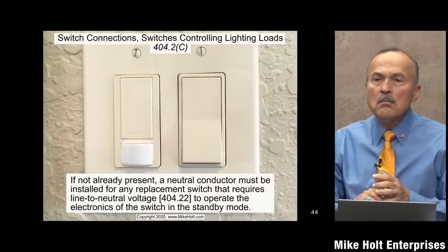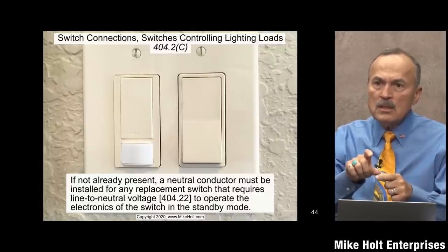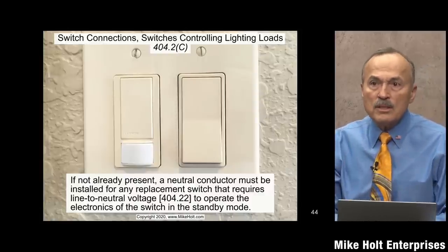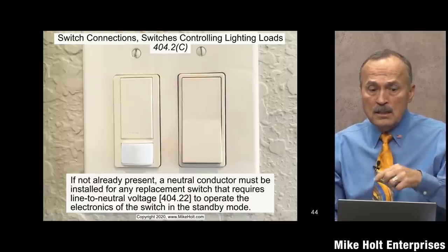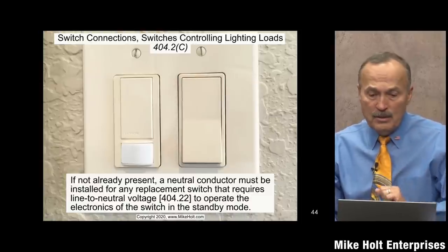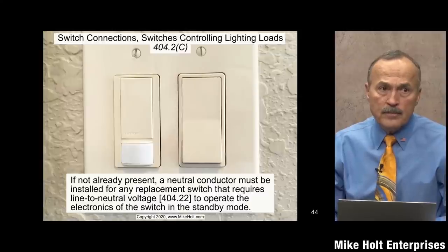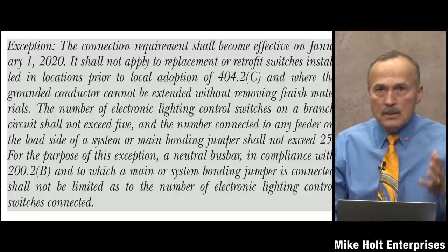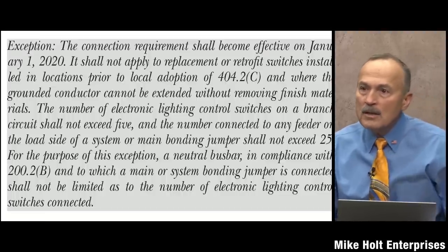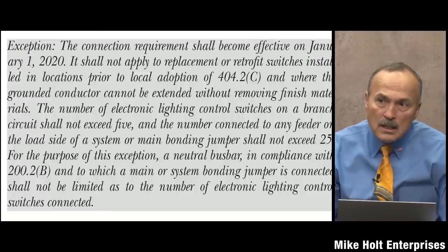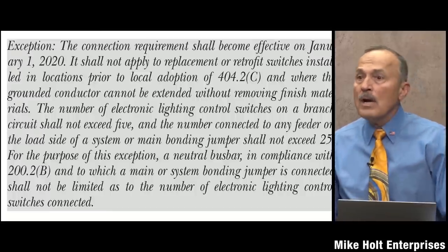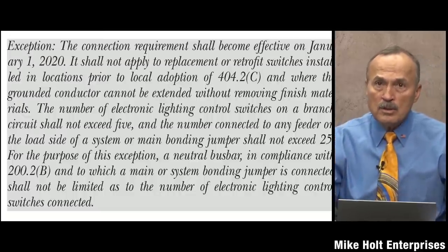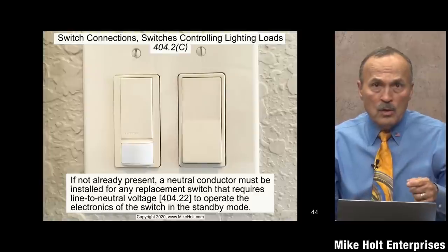Devices that require a neutral at the switch include occupancy sensors, smart switches, smart dimmers, daylight sensors, and timers. If you're installing any of these in a location that doesn't have a neutral, you must add a neutral. If you're in a spot where you can't add a neutral, there is an exception. The reference is NEC 210.70(A)(1), Exception 1 — in lieu of a lighting outlet, you can have a controlled receptacle.